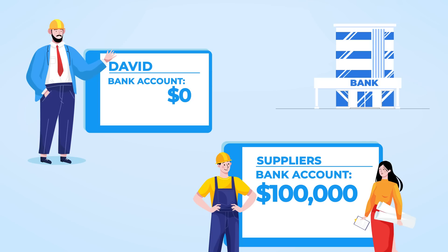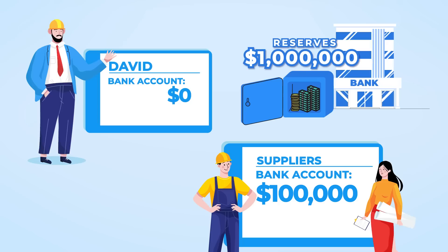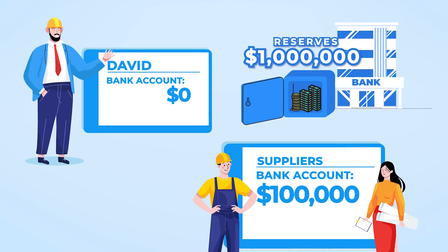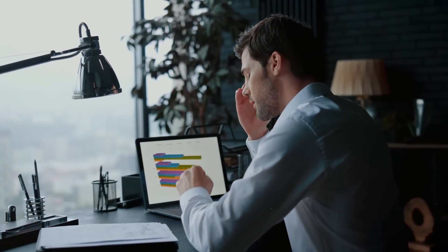Have you noticed that this money has come out of nowhere? Before David took out the loan, the bank had reserves of, say, $1 million corresponding to the savings of all its customers. In a normal loan, the bank would take money out of the safe and be left with $900,000 in reserves. However, the reserves are still $1 million, and David's suppliers now have $100,000 more in their accounts. The bank is telling its customers they have more money than it actually holds in reserve. The new money is just a little number on a computer screen.